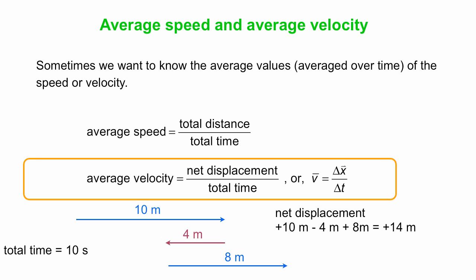Add that up, you get a net displacement of 14 meters, so you end up 14 meters to the right of where you started. Average velocity is 14 meters, plus 14 meters in fact, divided by the 10 seconds, plus 1.4 meters per second. Here the plus indicates that the average velocity is directed to the right.